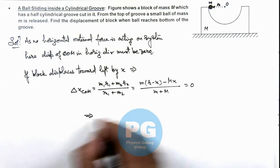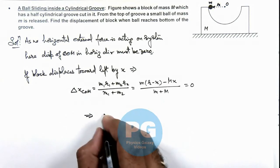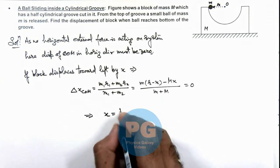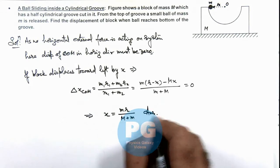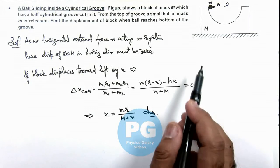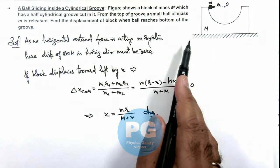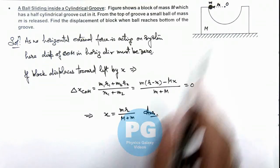This implies, simplifying this relation, we get x equals mr by capital M plus m. That will be the result of this problem: the displacement of block toward left due to the sliding of this ball.